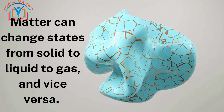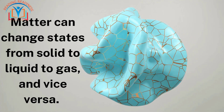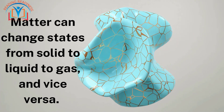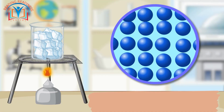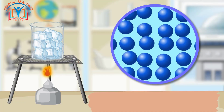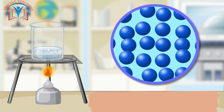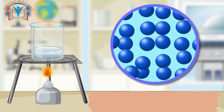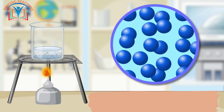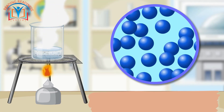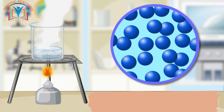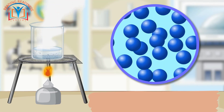Matter can change states from solid to liquid to gas, and vice versa. For example, when you heat ice it melts and turns into water. When you heat water, it boils and turns into steam.